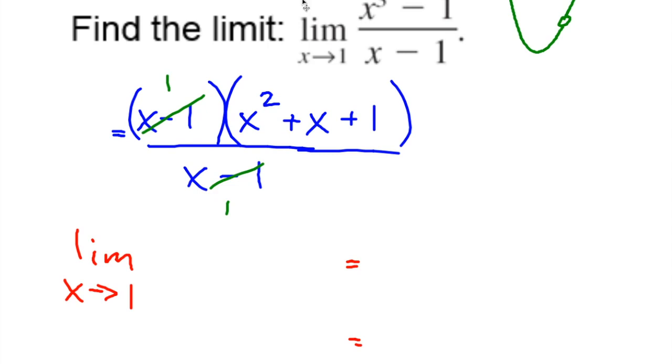We're going to factor the top. It's difference of cubes, so the cube root of the first term - the cube root of x³ is x, the cube root of negative 1 is negative 1. Then I'm going to take this x and square it to get the first term of the trinomial.